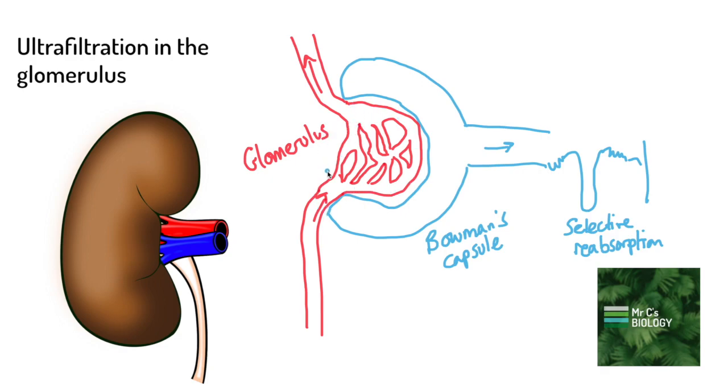So the blood here is under high pressure and that's going to force out a lot of the things that are inside the blood. Why don't you pause the video for a moment to see if you can think what sort of things will be filtered out of the glomerulus into the Bowman's capsule.